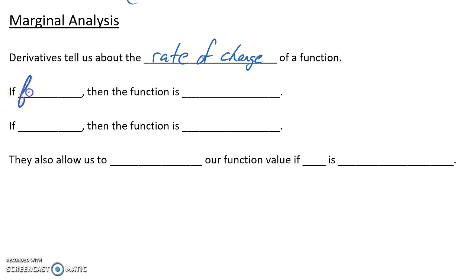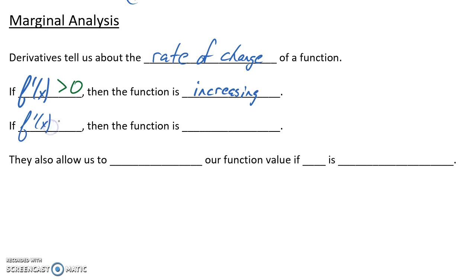If we evaluate our derivative function for some given value of x, we have a few different possibilities. We could have that derivative function giving us a result that's something greater than 0 — something positive. If our slope or rate of change is positive, that tells us that our function is increasing. Another scenario would be that our derivative function evaluated at some given point would be something less than 0, a negative result. If our slope or rate of change is negative, that would tell us that our function is decreasing.